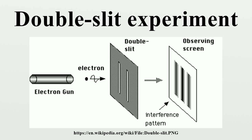Much of the behavior of light can be modeled using classical wave theory. The Huygens-Fresnel principle states that each point on a wave front generates a secondary wavelet, and that the disturbance at any subsequent point can be found by summing the contributions of the individual wavelets at that point. This summation needs to take into account the phase as well as the amplitude of the individual wavelets. Only the intensity of a light field can be measured, and this is proportional to the square of the amplitude. In the double-slit experiment, the two slits are illuminated by a single laser beam. If the width of the slits is small enough, the slits diffract the light into cylindrical waves. These two cylindrical wave fronts are superimposed, and the amplitude and therefore the intensity at any point in the combined wave fronts depends on both the magnitude and the phase of the two wave fronts.